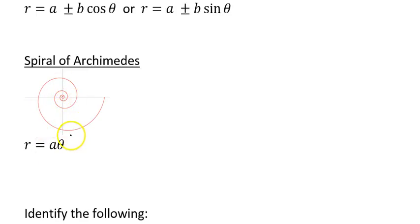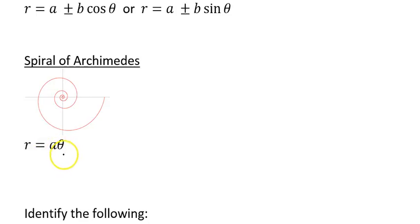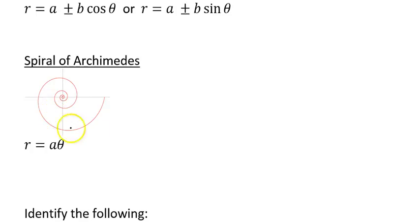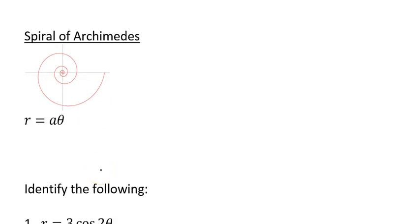Then we have the spiral of Archimedes. This is kind of complicated sometimes, but the ones we deal with can end up simpler. The equation is easy to identify because it's just r equals a number times theta. So those are all the types we're going to look at for right now.